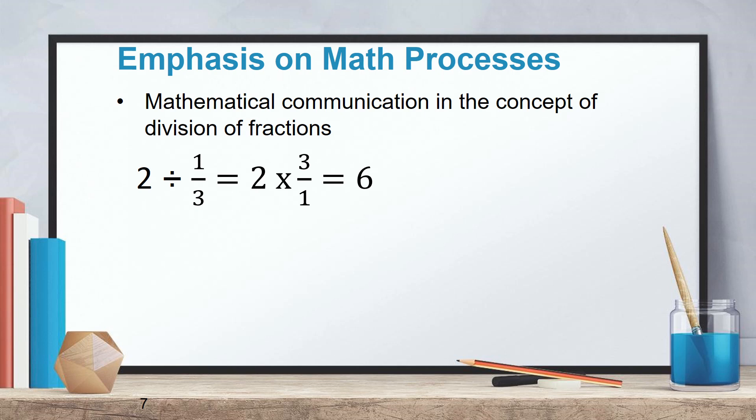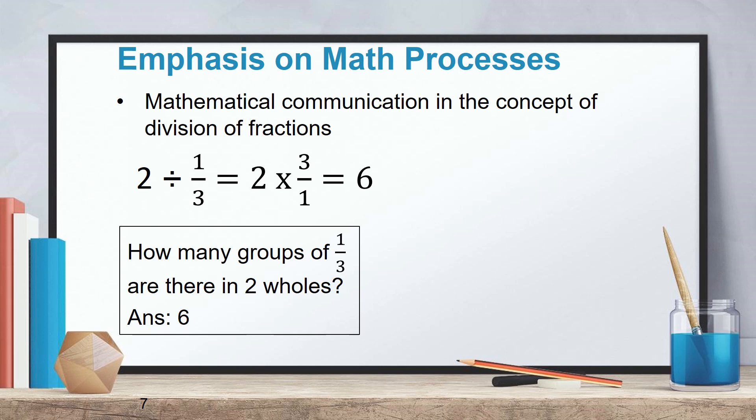Let me share one example on the emphasis on mathematical processes. From this question, 2 divided by 1 third equals, most students will know that they have to change division to multiplication and they invert the fraction from 1 third become 3 over 1. So it will give them 6. But what does it mean? During math lesson, the teacher will explain. Actually, it means how many groups of 1 third are there in 2 wholes?